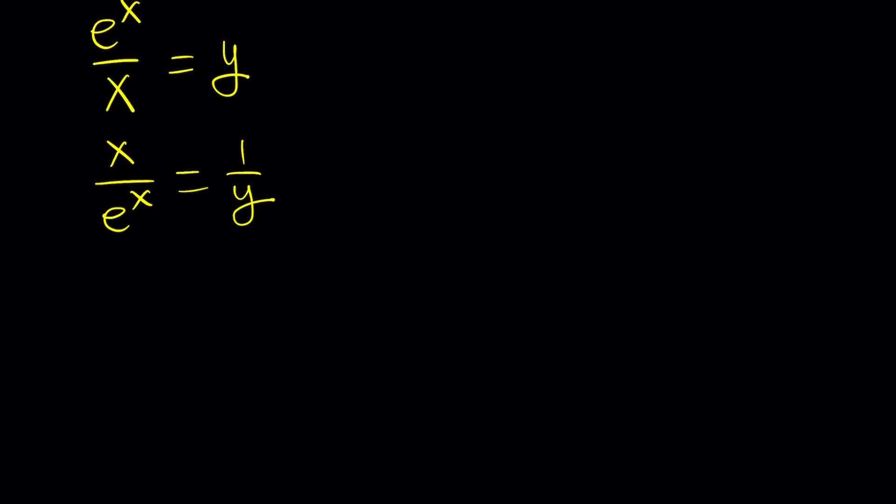But this gives us x in the numerator, which is really good. And then e to the x, because it's in the denominator, we can use negative exponents to express that. And this is basically the type of structure we're looking for.